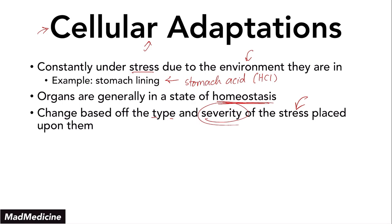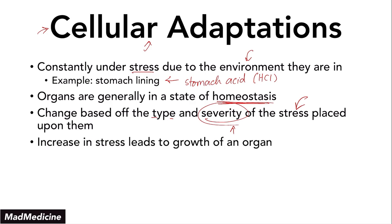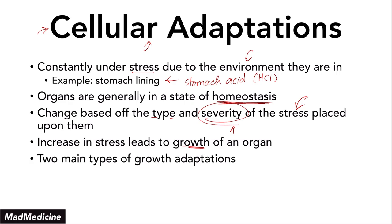Different types of stresses are going to lead to different pathways, which we'll come back to later in this series. The severity and type of stress are going to change our organs in certain ways. An increase in stress, regardless of type or severity, is essentially going to lead to the growth of an organ — either through hyperplasia or hypertrophy, which are the two main types of growth adaptations you should be familiar with.